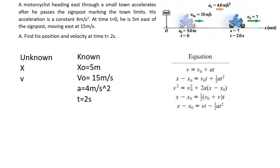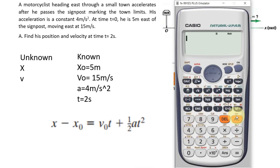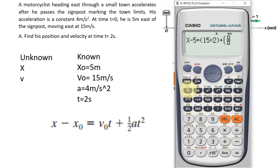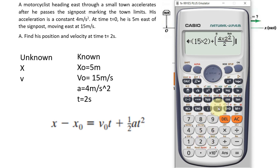Let us compute his final position at t equals 2 seconds using the second kinematic equation. We have: final position minus initial position (5 m) equals initial velocity (15 m/s) times t (2 s), plus one-half times acceleration (4 m/s²) times time squared (2²). Therefore, the final position at t equals 2 seconds is 43 m.